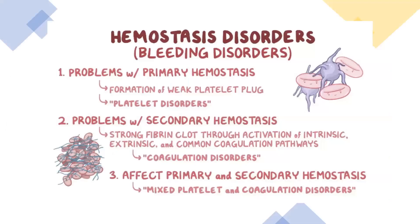Hemostasis attempts to maintain a delicate balance, and several diseases affect it. In hemostasis disorders — also called bleeding disorders — we have problems with primary hemostasis, like formation of a weak platelet plug. We also have problems with secondary hemostasis, which is strong fibrin formation through activation of intrinsic, extrinsic, and common coagulation pathways, called coagulation disorders. Mixed platelet and coagulation disorders also exist.